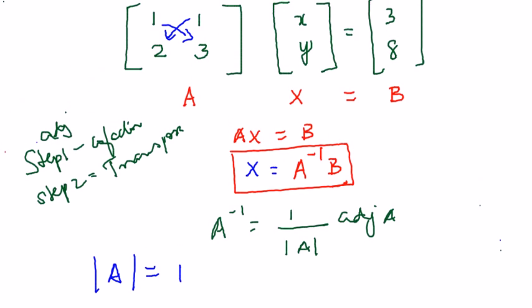So what is the adjoint of matrix A? Let us write the cofactors first. Cofactor of 1, when we hide the corresponding row and column, we get 3. Cofactor of the next one, we get 2. Cofactor of 2, we get 1. And cofactor of 3 here, when we hide the corresponding row and column, we get 1.